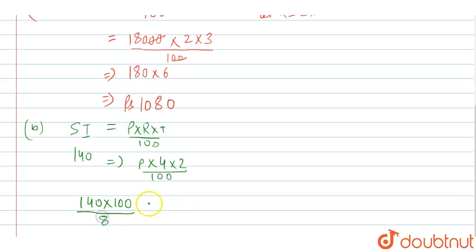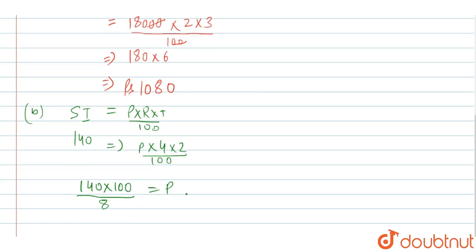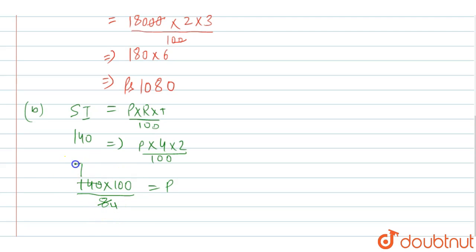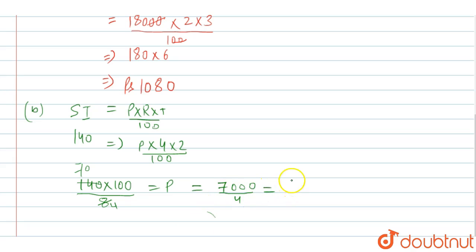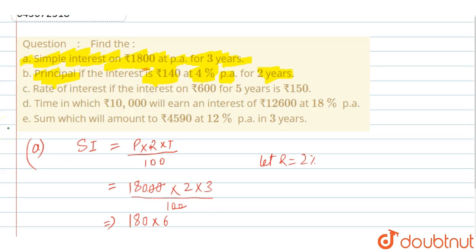So 140 into 100 upon 4 into 2, which is 8. Simplifying: 140 into 100 divided by 8 gives us 70 into 100 upon 4, which equals 7000 upon 4. So the principal is ₹1750 for sub-part B.